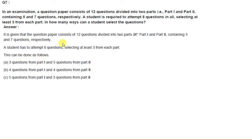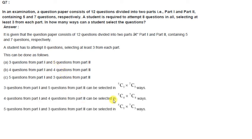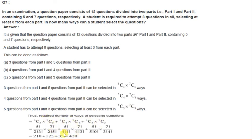There are three cases: (1) 3 from Part 1 and 5 from Part 2 — done in 5C3 × 7C5 ways; (2) 4 from Part 1 and 4 from Part 2 — done in 5C4 × 7C4 ways; (3) 5 from Part 1 and 3 from Part 2 — done in 5C5 × 7C3 ways. The total number of ways is the sum of all three cases, and after calculation we get 420.